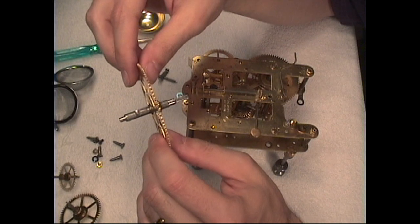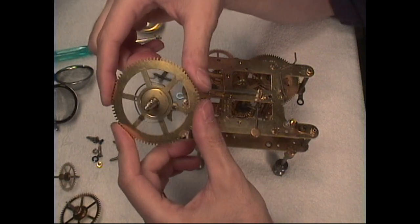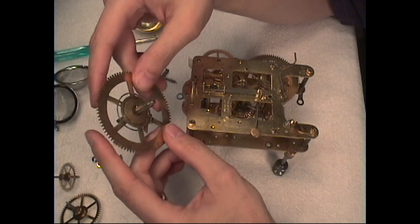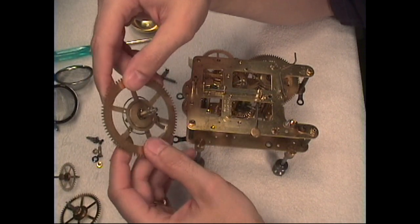So we're going to do that, and then after that we're going to reinstall the springs onto the first wheel or the great wheel. Once we've done those two things, then we can assemble the entire clock and see how it looks at that point.